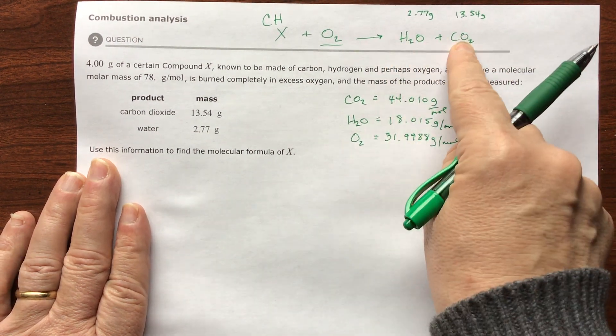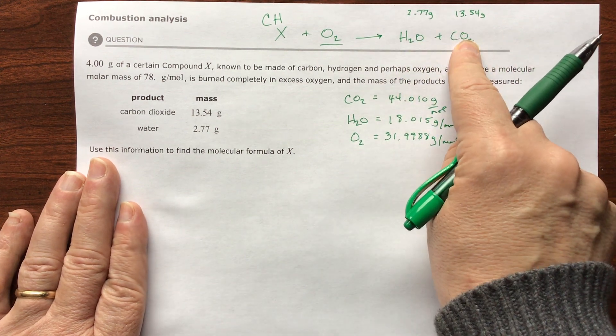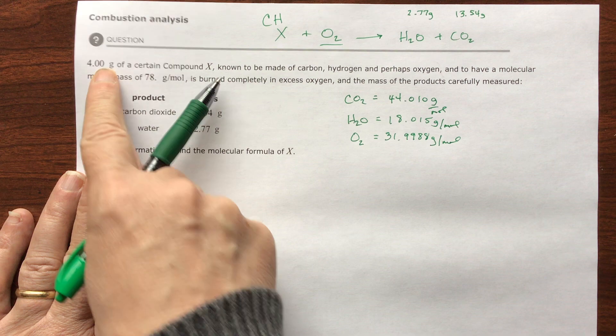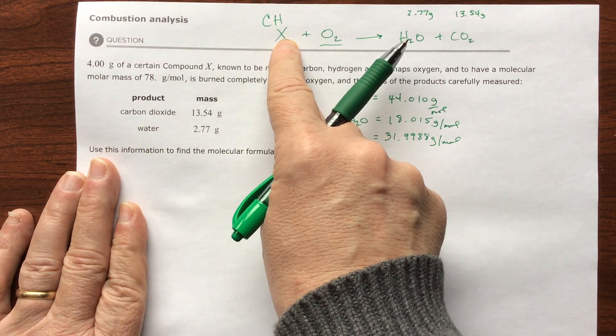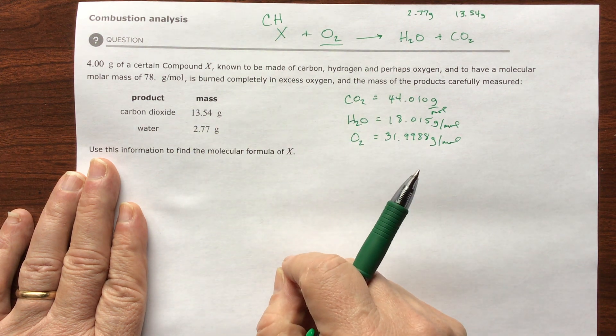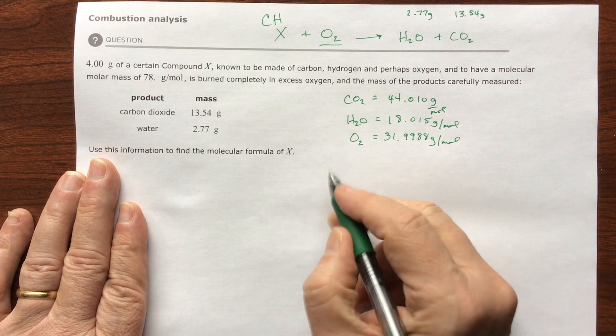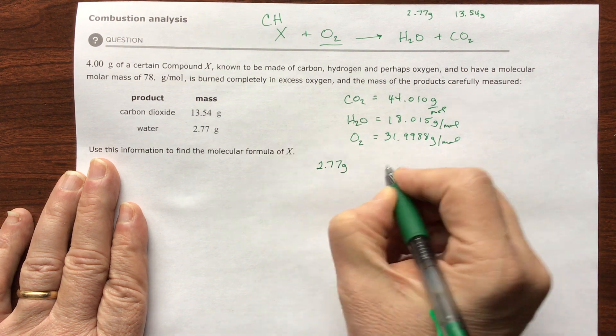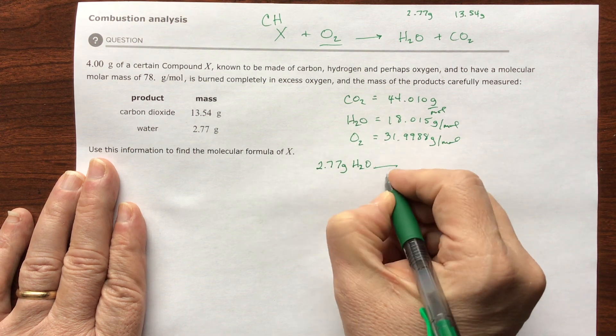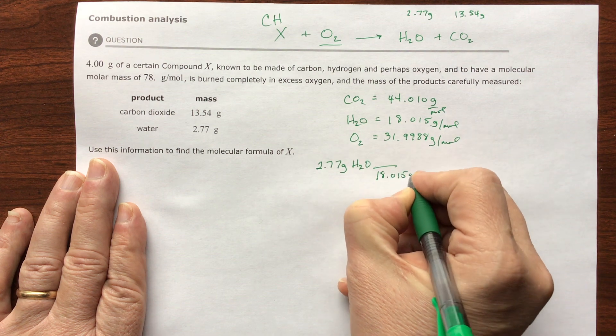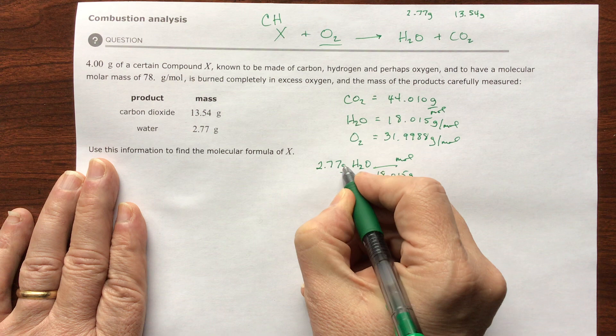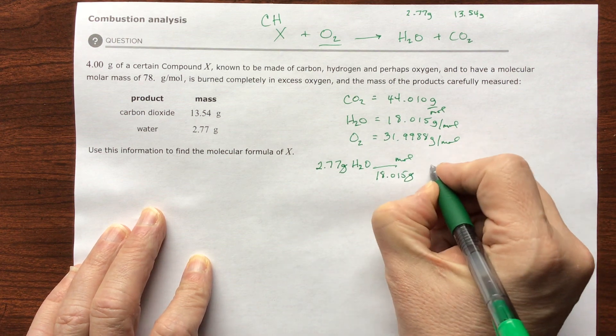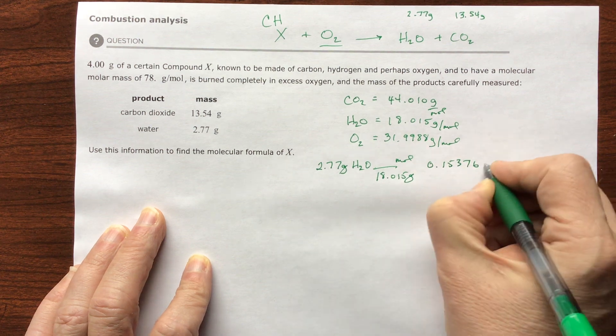Let's find out how many moles of water and carbon dioxide we have. If I know grams, its molar mass, and moles, then I can tell you which atoms they are and what combination they're in. Let's do water first: 2.77 grams of water. Water is 18.015 grams per mole. I want to get rid of grams, so grams go on the bottom. When I divide this out, I'm going to get 0.15376 moles of water.